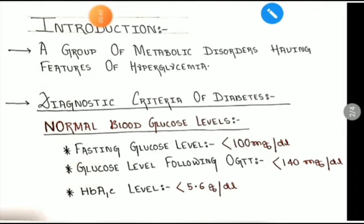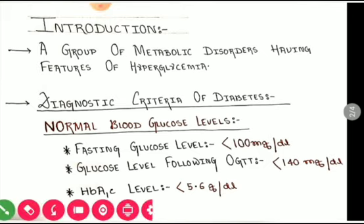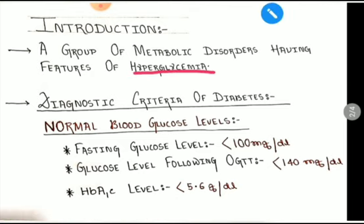Diabetes mellitus is a group of metabolic disorders having the feature of hyperglycemia. Hyperglycemia means increased levels of glucose in the blood.